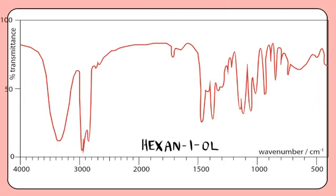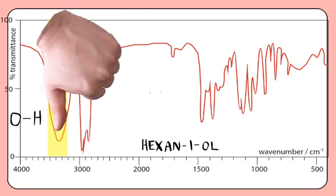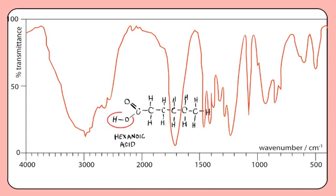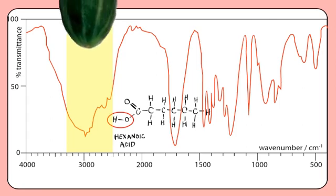Another important peak is one that results from the presence of OH in alcohols, which occurs as a broad peak between 3200 and 3550 centimetres to the minus 1. The OH peak in alcohols can be thought of as being like a thumb. The peak that results from OH groups in carboxylic acids is much broader than that in alcohols and is between 2500 and 3300 centimetres to the minus 1. You can think of this as a cucumber.